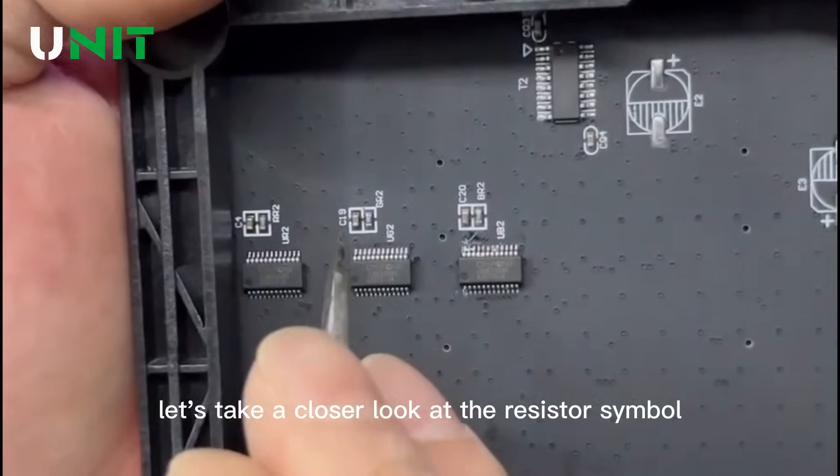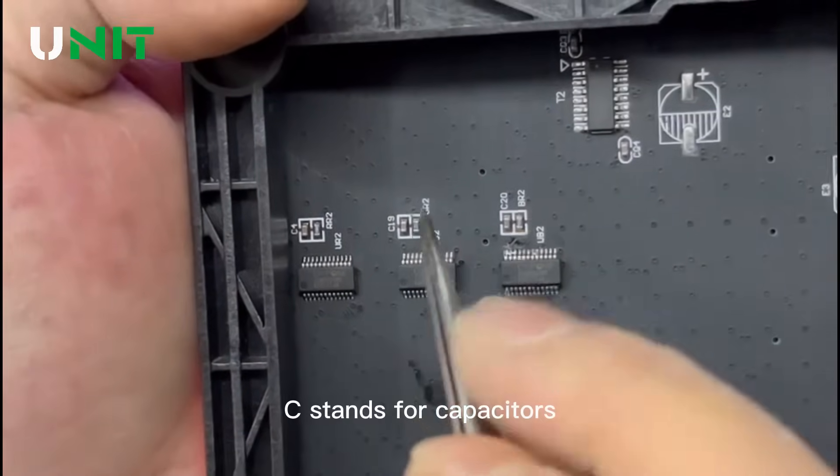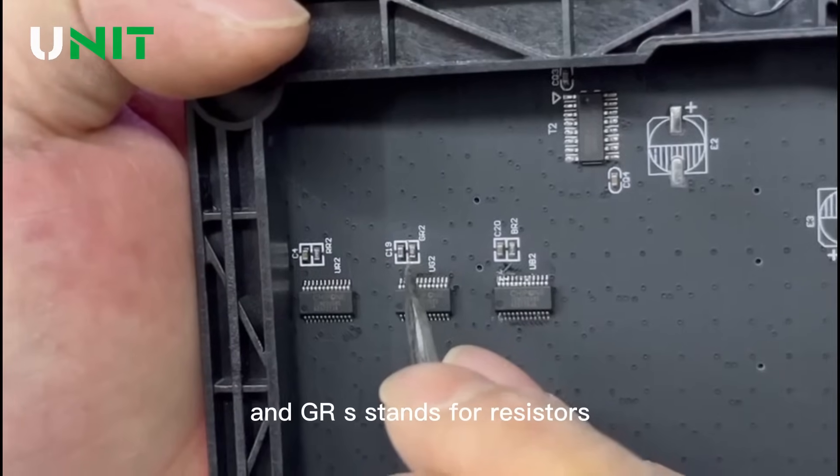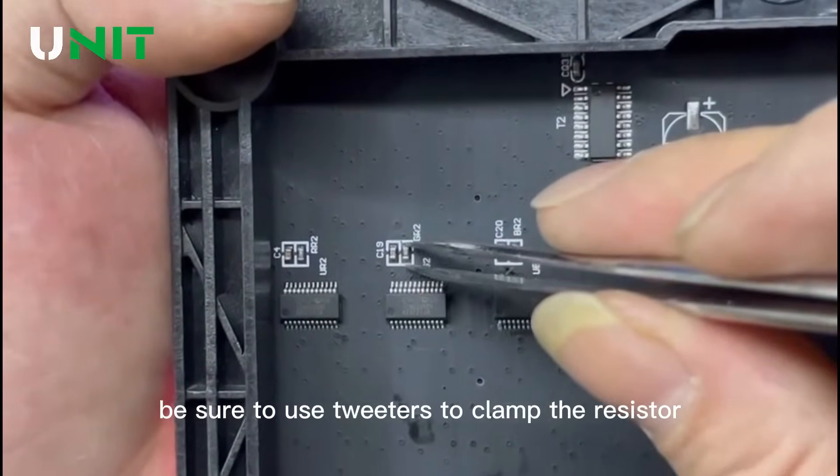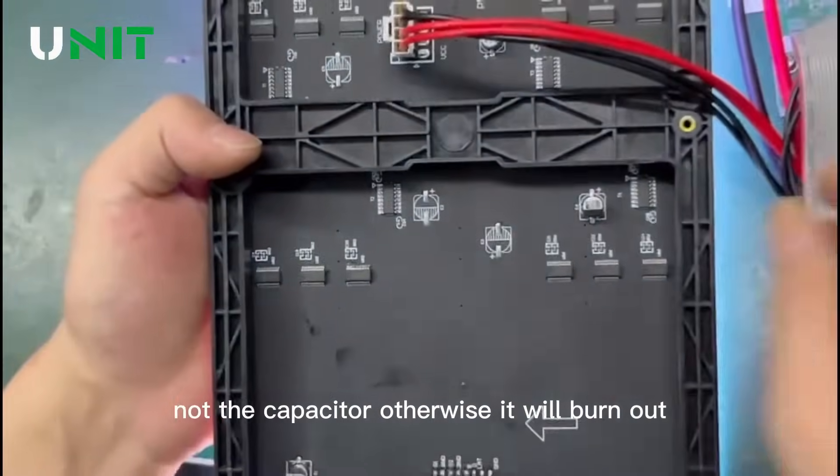Next, let's take a closer look at the resistor symbol. C stands for capacitors and GR stands for resistors. Be sure to use tweezers to clamp the resistor, not the capacitor, otherwise it will burn out.